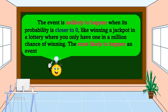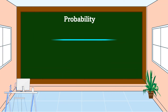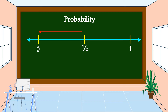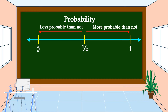The more likely an event is to happen, the closer its probability is to one. Probability is in between zero and one, and in between zero and one is one half. Less than one half means less probable than not; more than one half means more probable than not.